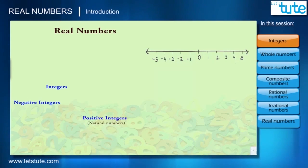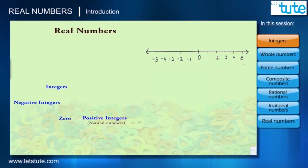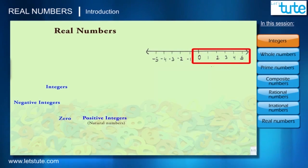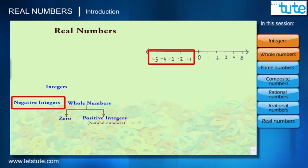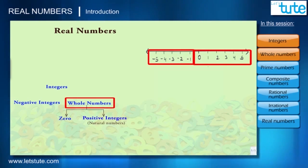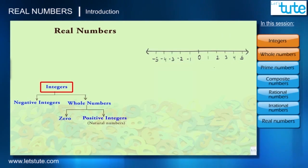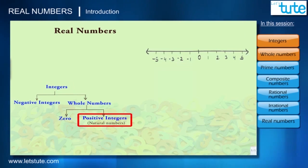Positive integers are also known as natural numbers. If we take 0 with only positive integers, they are called whole numbers. So we can say that negative integers and whole numbers together are called integers.